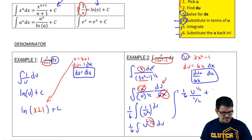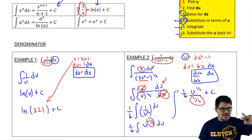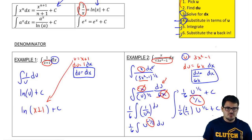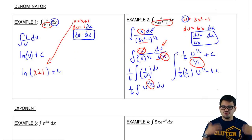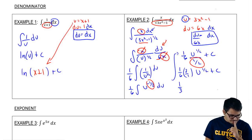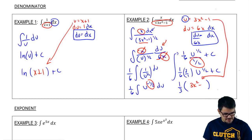There's a lot more manipulation in example 2 compared to example 1 — that's why it's more challenging. We integrate u to the negative 1 half by adding 1 to the exponent: negative 1/2 plus 1 gives 1/2. Then we divide by 1/2, which means we multiply by the reciprocal, 2 over 1. So we have 1/6 times 2/1 times u to the 1/2 plus c. That simplifies to 1/3 times u to the 1/2 plus c. Plugging u back in: 1/3 times (3x squared minus 1) to the 1/2 plus c.